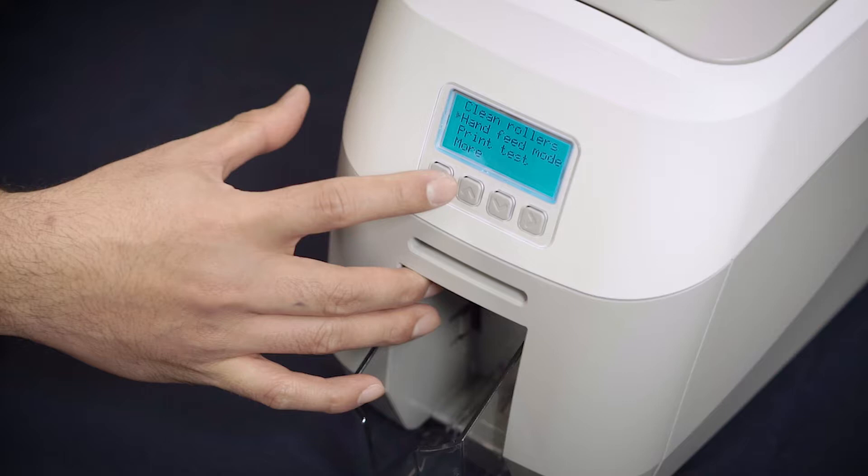Once one side has been printed, for double sided printing, turn the card over and reinsert with the blank side facing upwards. Again, take care to avoid touching the printable surface.